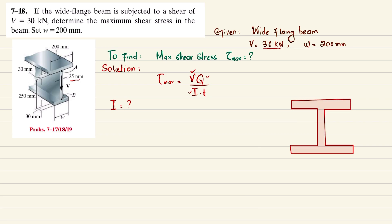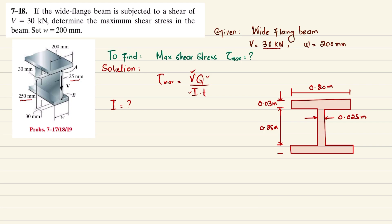Drawing the beam cross-section: the flange width is 200 millimeters (0.20 m), the web thickness is 25 millimeters (0.025 m), the top flange thickness is 30 millimeters (0.03 m), the web height is 250 millimeters (0.25 m), and the bottom flange thickness is also 0.03 m.